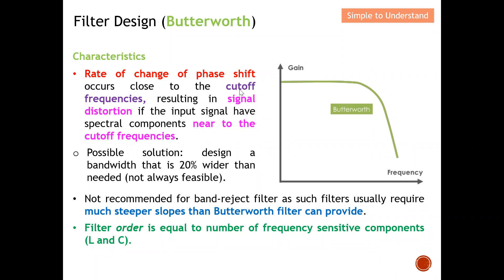The rate of change of phase shift occurs close to the cutoff frequency, which always results in signal distortion at that area, especially if the input signal falls in this region. Hence, a possible solution is to design a bandwidth that is 20 percent wider than needed — however, this may not always be feasible — in order to avoid signal distortion near the cutoff frequency.